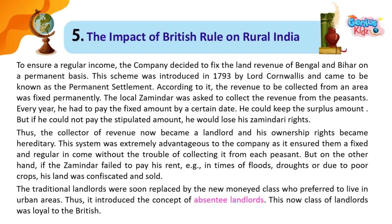Every year, the zamindar had to pay the fixed amount by a certain date. He could keep the surplus amount, but if he could not pay the stipulated amount, he would lose his zamindari rights. Thus, the collector of revenue now became a landlord and his ownership rights became hereditary. This system was extremely advantageous to the company as it ensured them a fixed and regular income without the trouble of collecting it from each peasant.